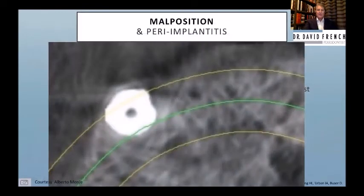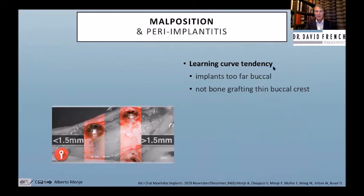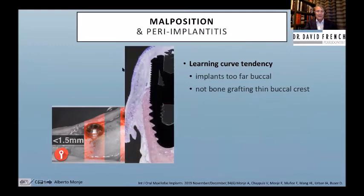Malposition is the elephant in the room — it matters most. Here you can see the ridge outline and the implant is practically outside the buccal crest. This was an immediate implant placed in the socket wall rather than angling it toward the palatal wall — a classic learning curve mistake. If the implant is too buccal and you don't graft, it will disappear. Alberta Monnier's group showed an implant that started in bone but ended up completely exposed — so you need to recognize thin bone and graft it.